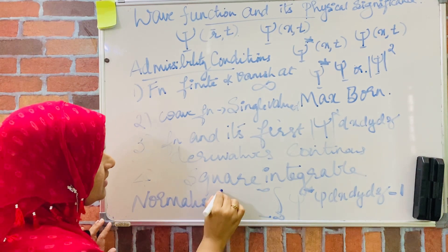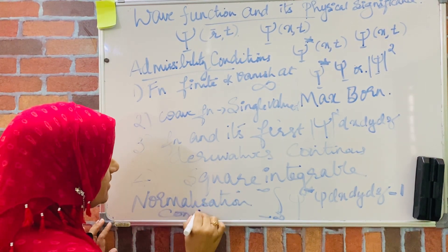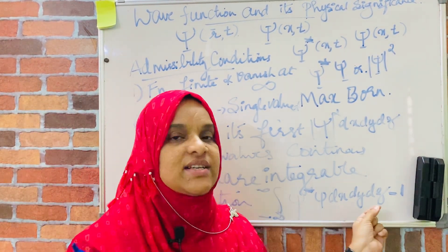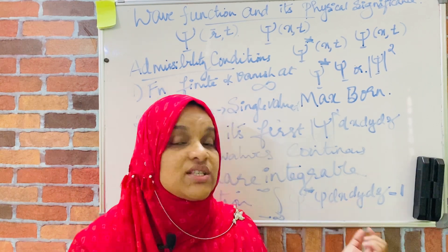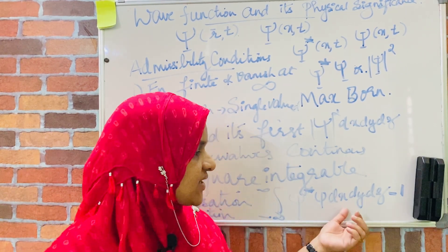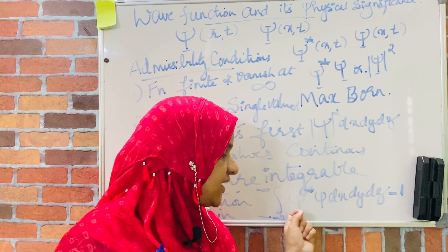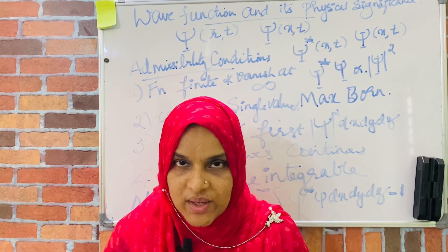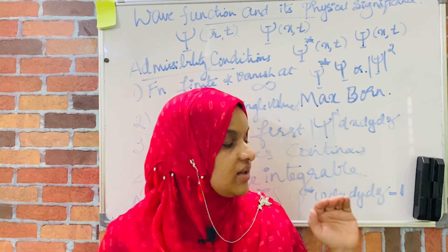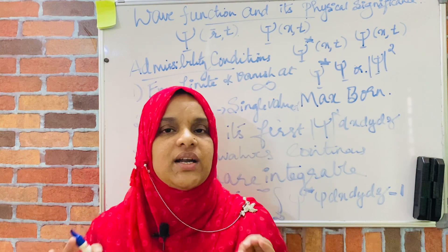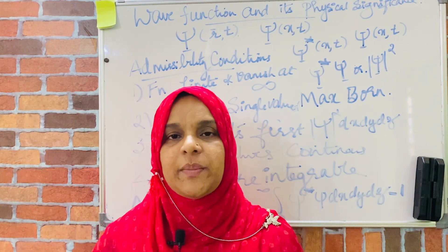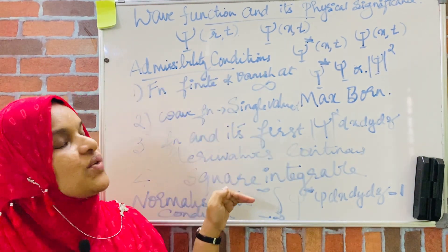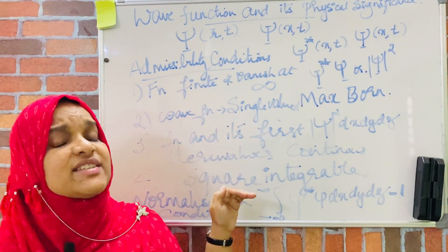The normalization condition states that the integral from minus infinity to infinity of psi star psi d-tau should be equal to 1, where d-tau equals dx dy dz. Because if the particle is present, there should be a finite probability of finding the particle in that region. These are the admissibility conditions of a function to be acceptable as a wave function.